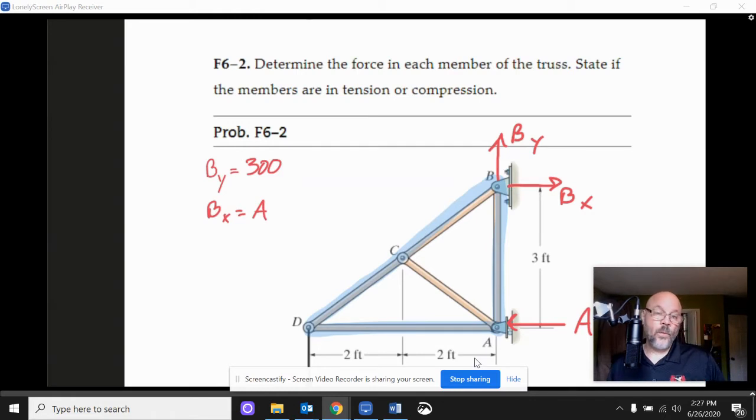And we see that BX and A have to be the same thing. Now we don't know what A is or BX just yet, but we know they're equal and opposite. So we've got the horizontal forces, the vertical forces. Now let's think about the moments.